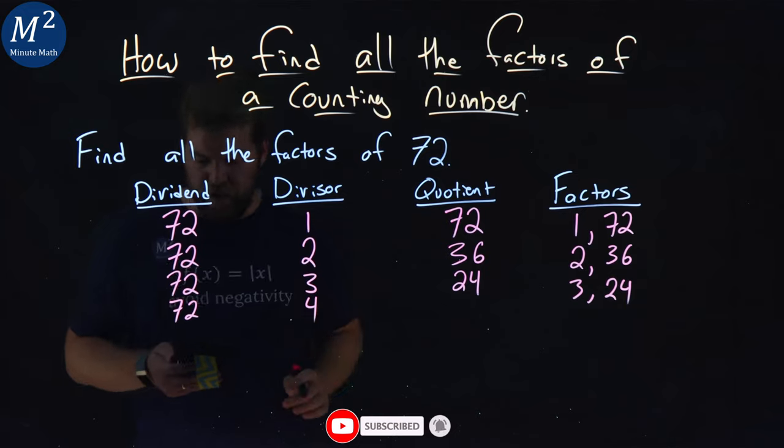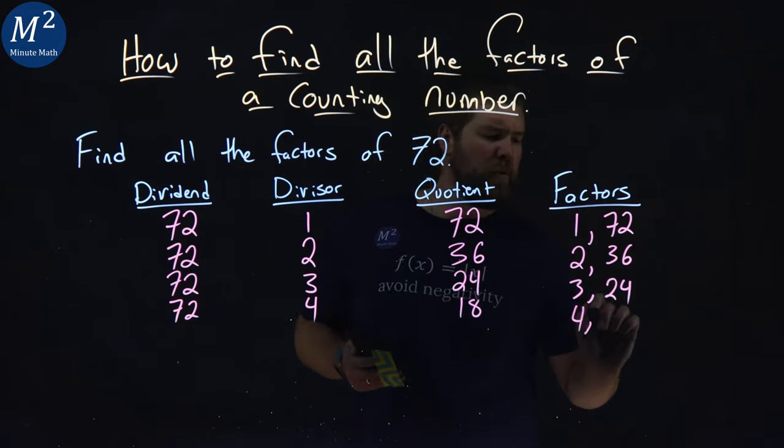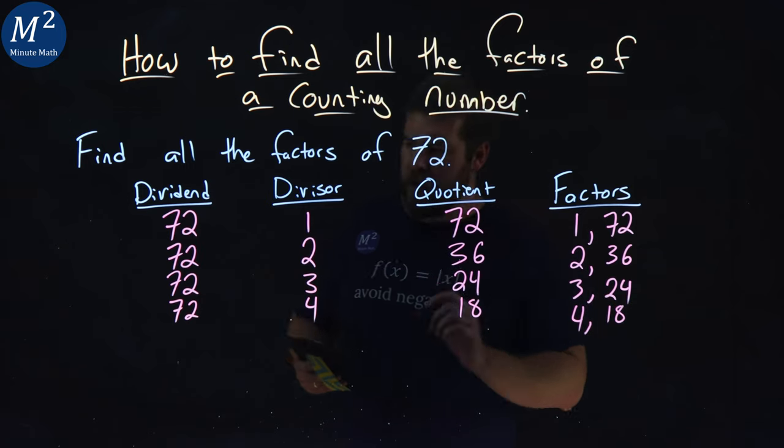We got 4. Next one. Does 4 go into 72? Yes, 18 times. So factors are 4 and 18. Keep on going.